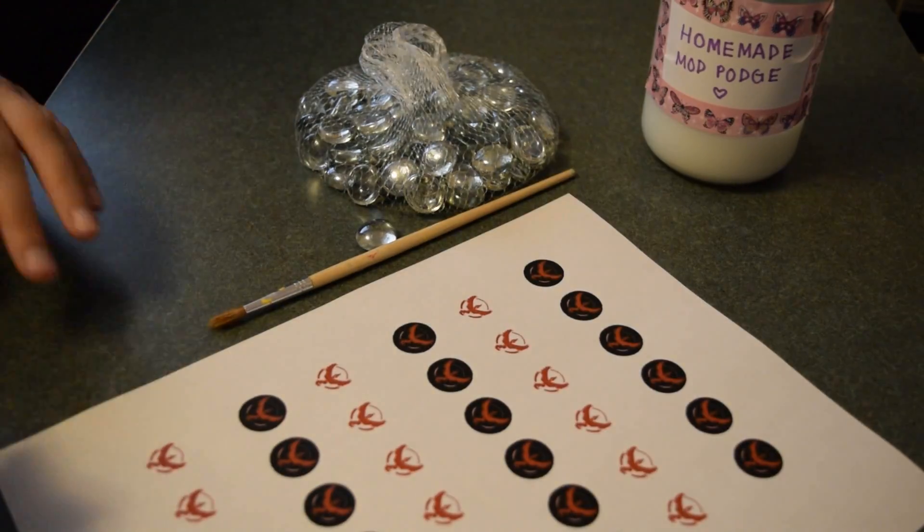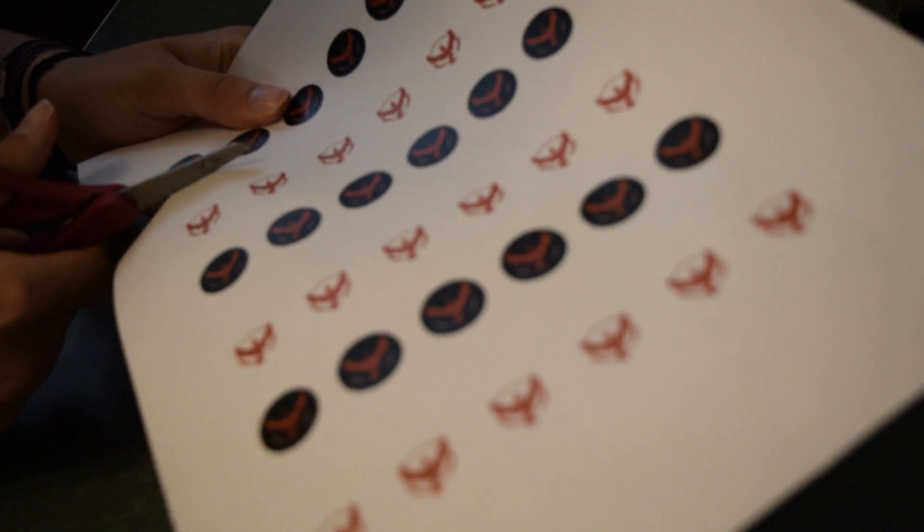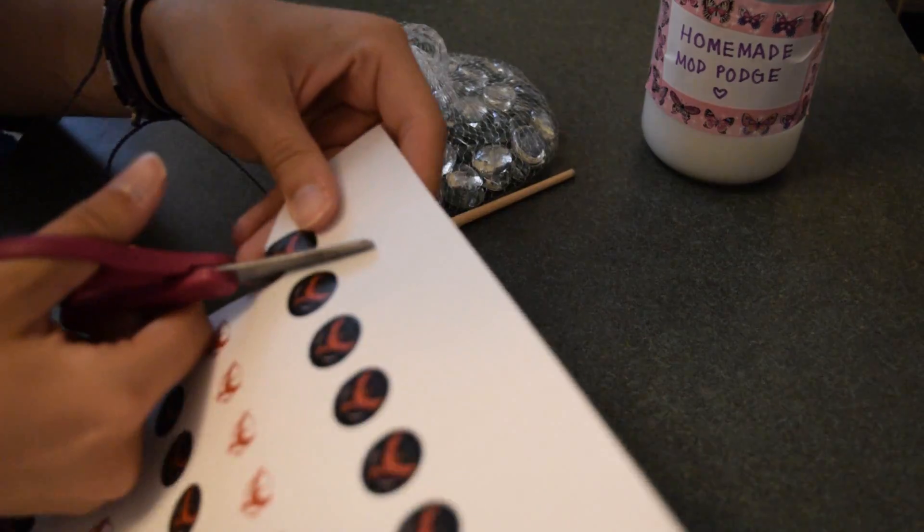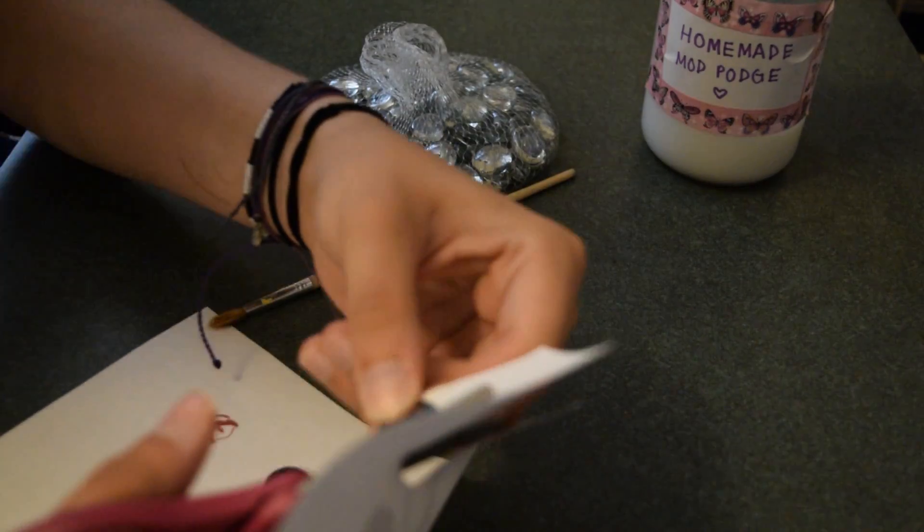The tedious task comes first. Cut out your team emblems, but don't worry too much about making them perfect as the gemstone will help hide any imperfect edges.